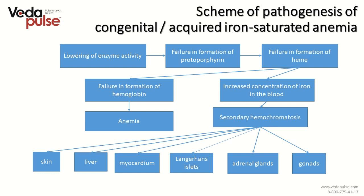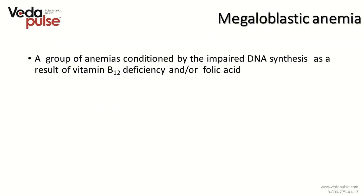The scheme of pathogenesis of congenital/acquired iron-saturated anemia: the activity of the enzyme gets disturbed, leading to two consequences — development of anemia as a result of lack of hemoglobin, and development of secondary hemochromatosis as a result of accumulation of iron in the body. Megaloblastic anemia is caused by disruption of DNA synthesis as a result of the lack of vitamin B12 and folic acid.